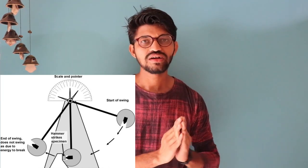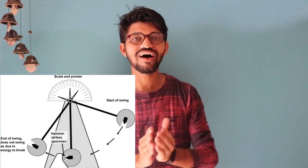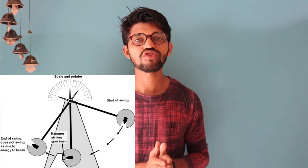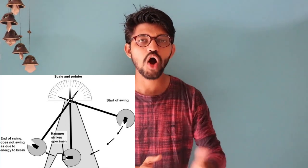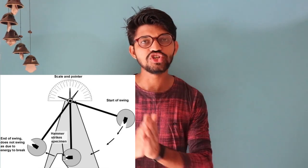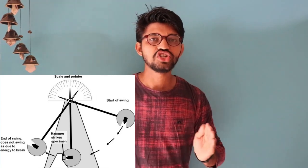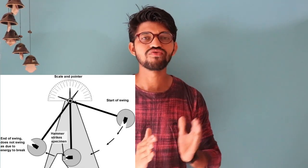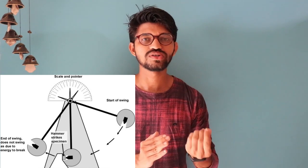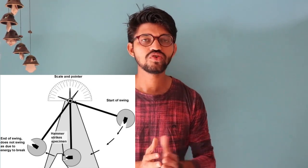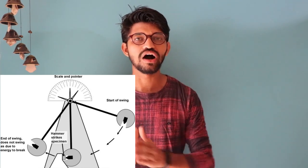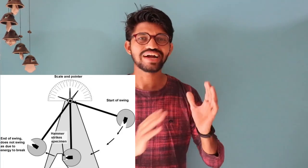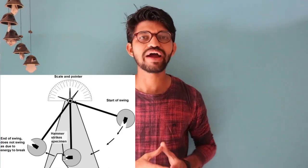After the striking, the scale gives another reading which must also be noted down. The total amount of energy absorbed by the specimen — expressed in joules — is calculated as the initial potential energy in the hammer minus the energy after striking. This gives us the amount of energy actually absorbed by the specimen. That was the whole procedure of the IZOD Impact Test.